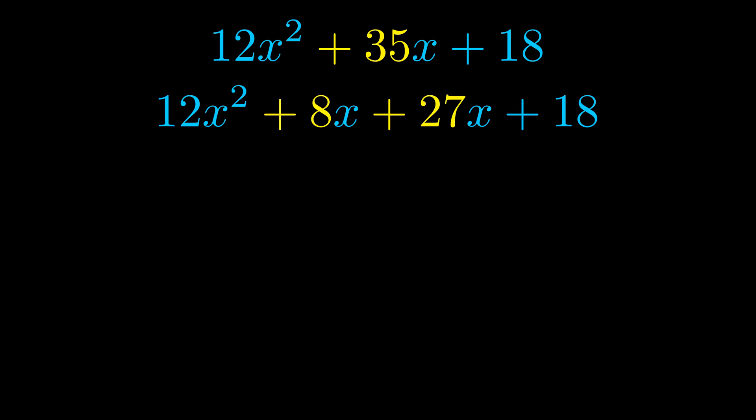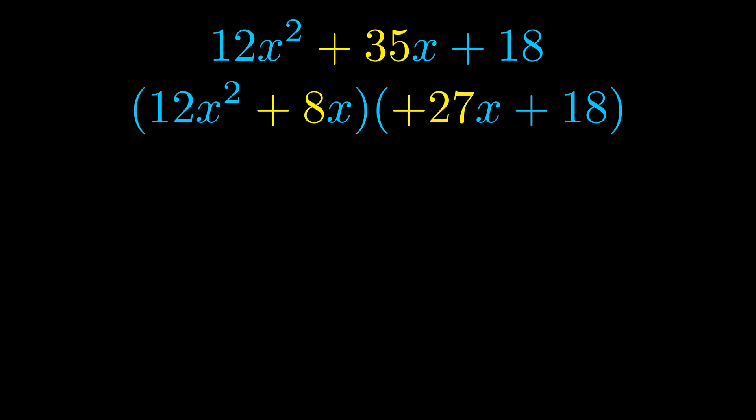Once we've done this we go ahead and we put parentheses around the first term and the last term. And we do that so that we can take the greatest common factor out of both terms. We can see the greatest common factor is now outside in green.